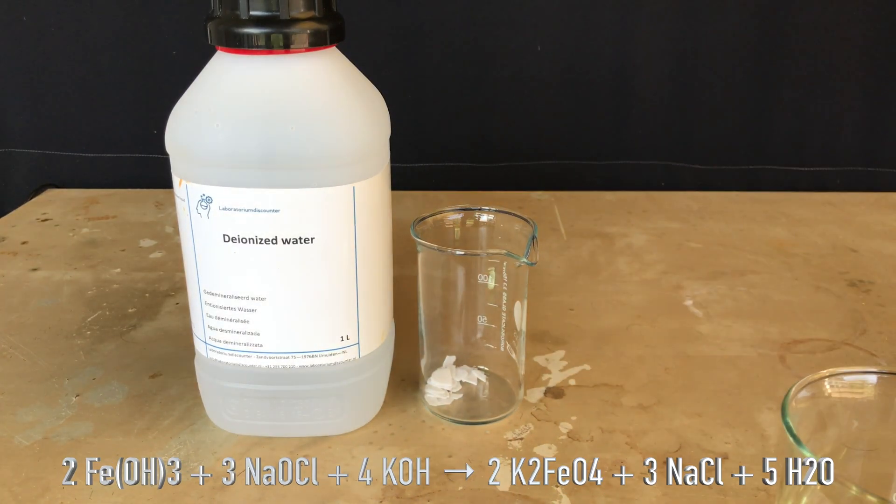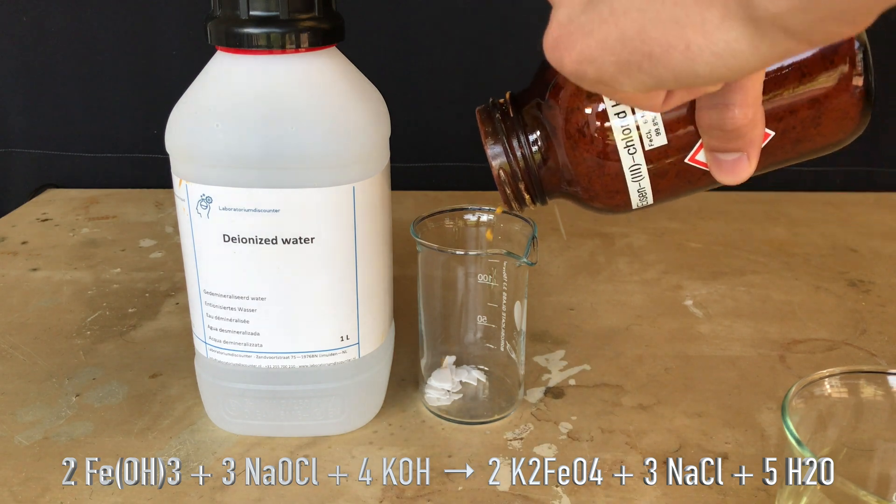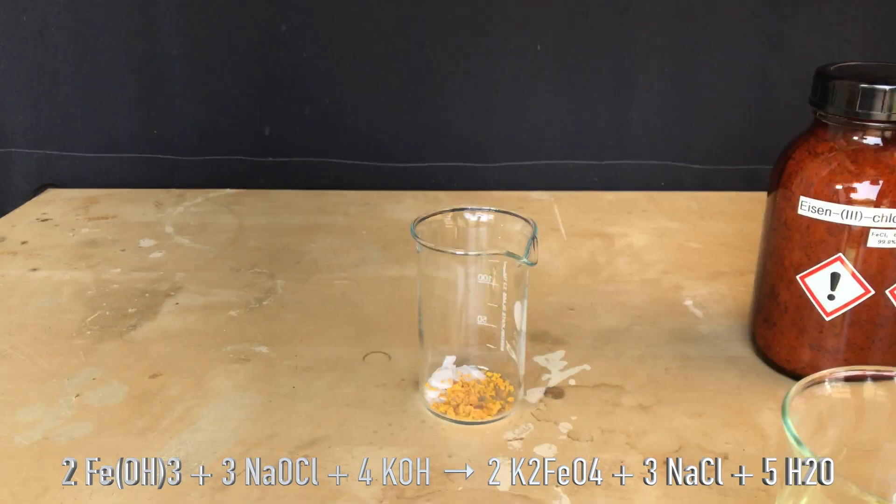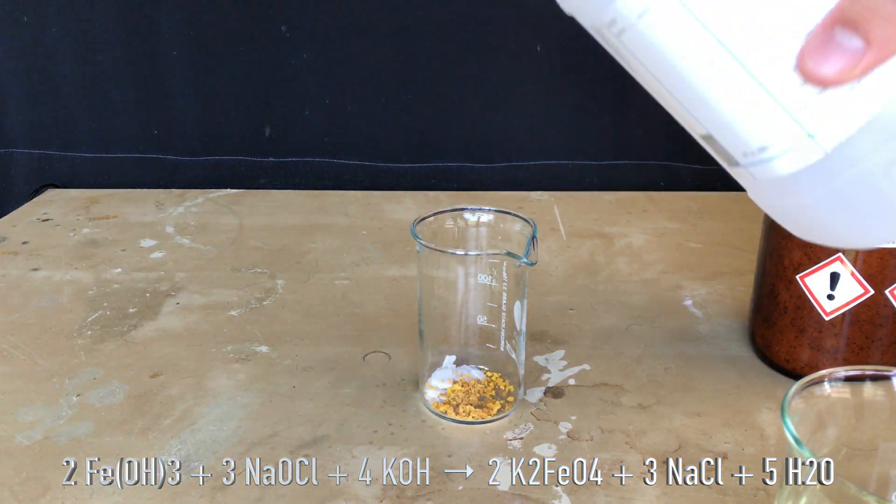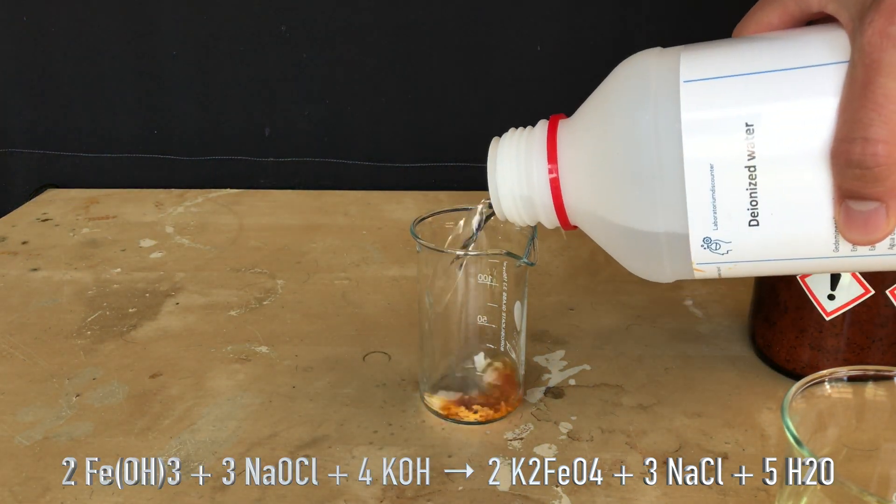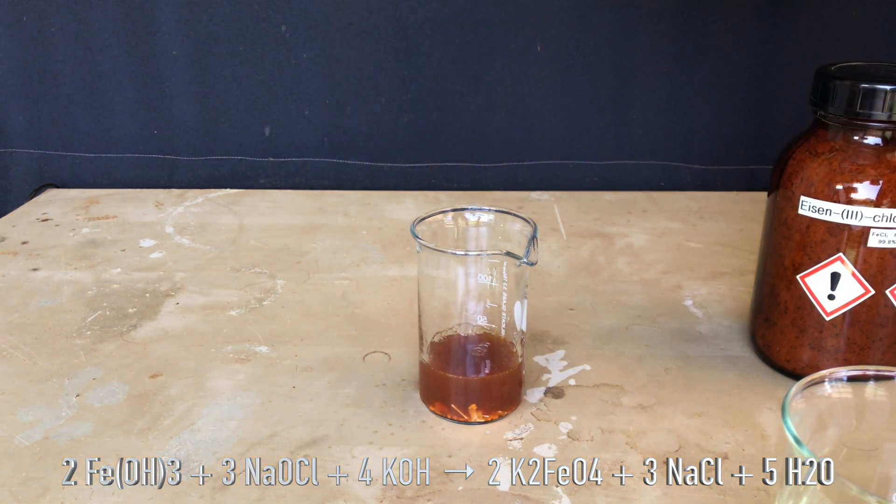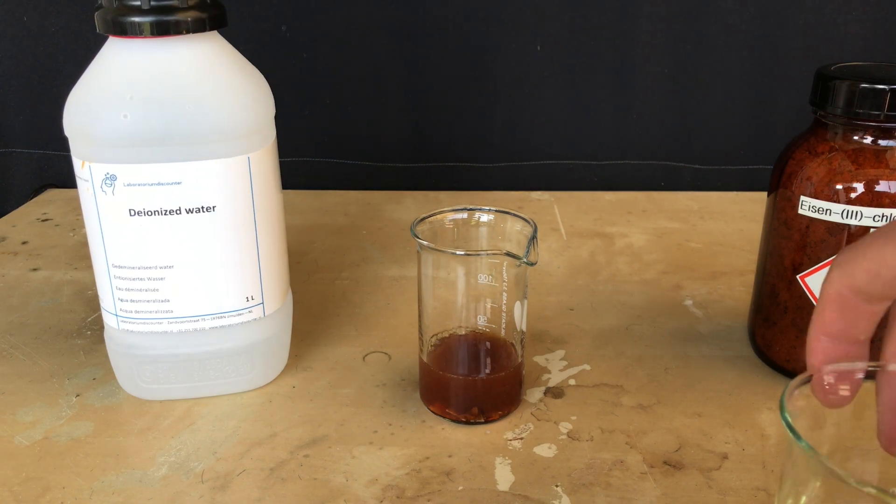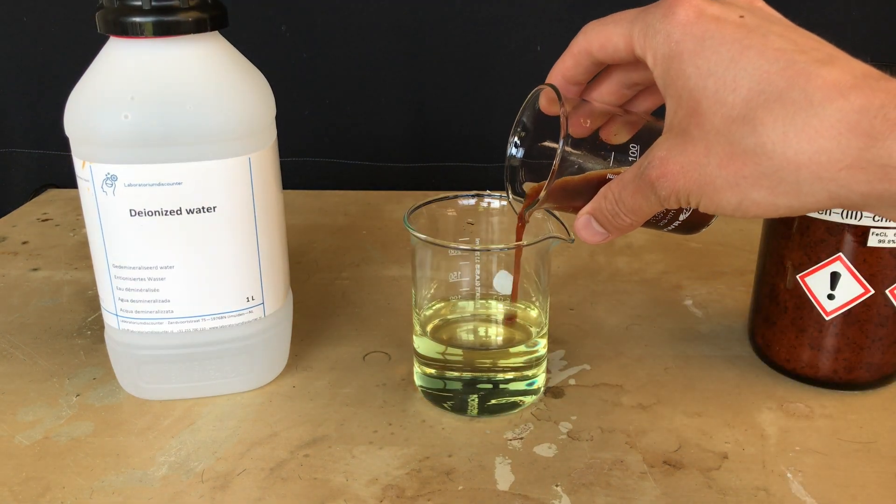One way to make potassium ferrate is to mix freshly prepared iron hydroxide with sodium hypochlorite and an excess of potassium hydroxide. To do this I put some potassium hydroxide and iron chloride into the beaker and added deionized water. Upon adding the water you immediately get this brown precipitate, which is iron hydroxide.